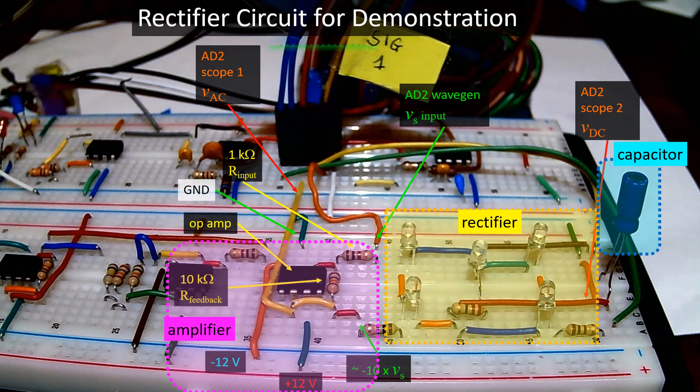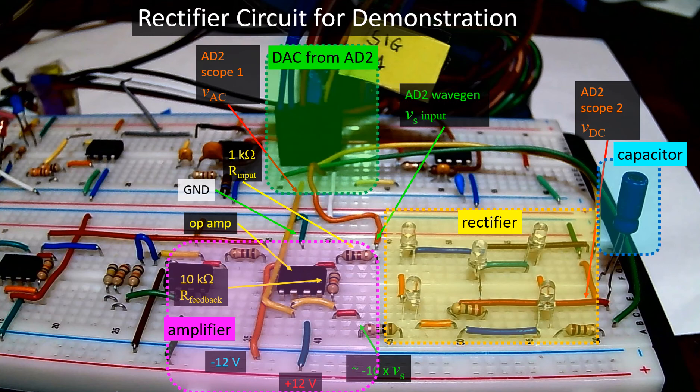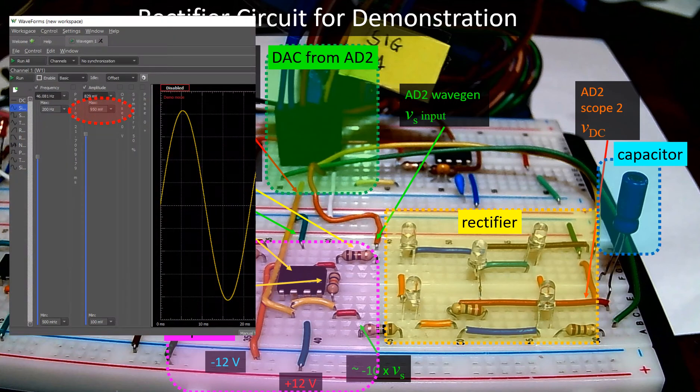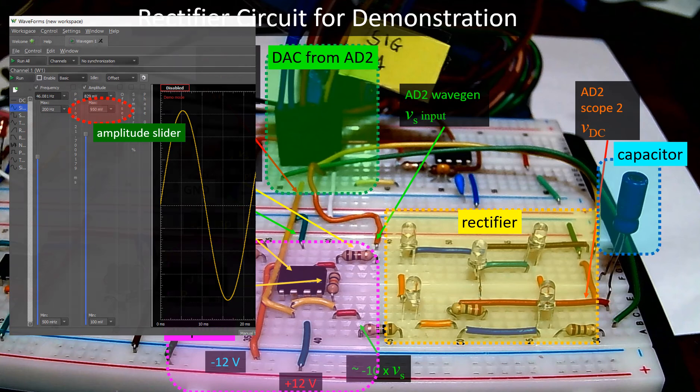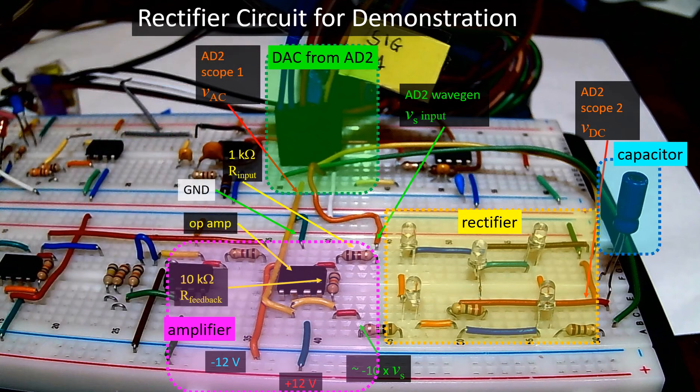When testing the circuit with the AD2, put a maximum limit of say 0.95 volt or so on the AD2 signal generator. Then use the amplitude slider to increase slowly while keeping an eye on the LEDs so that they are not too bright and at risk of being burnt. Then adjust the maximum limit to the level you are most comfortable with, and save this configuration for all the subsequent measurements.